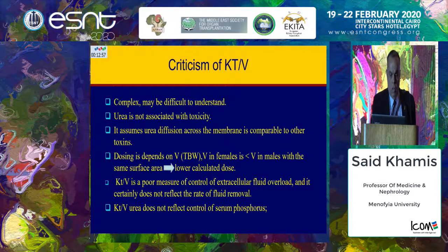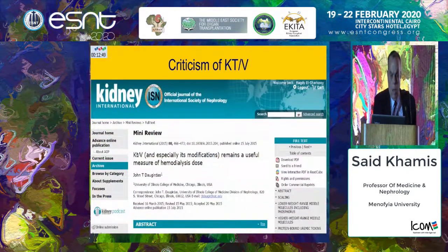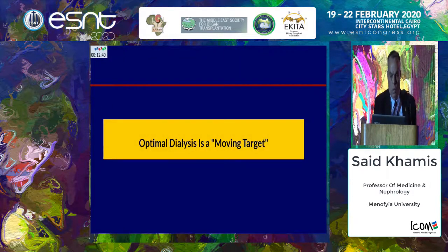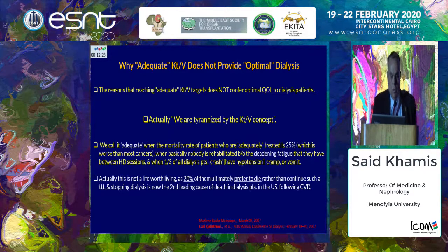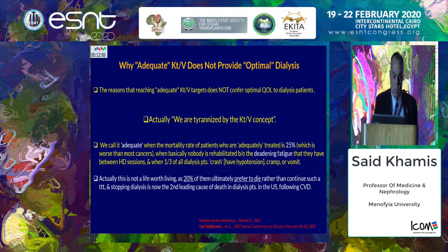There is a lot of criticism of KT/V, though we cannot deny that KT/V and its modifications remain a rather useful measure of hemodialysis dose. What is optimal dialysis? Reaching an adequate KT/V target does not guarantee optimal quality of life for dialysis patients. We are tyrannized by the KT/V concept. When the mortality rate of adequately treated patients is 25%, what we call adequate is not enough. Patients suffer symptomatic burdens like dizziness, fatigue, hypotension, cramps, and vomiting — this is not a life worth living. As 20% of them ultimately prefer to die rather than continue such treatment, and stopping dialysis is now the second leading cause of death in dialysis patients in the US, following cardiovascular disease.